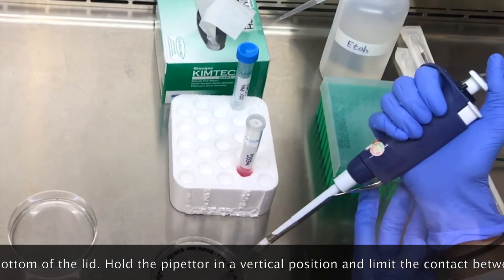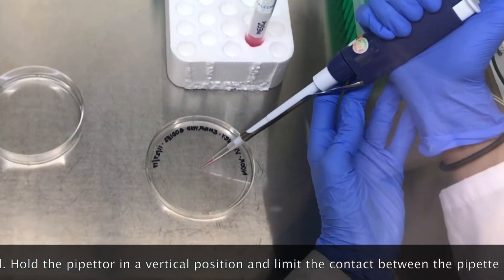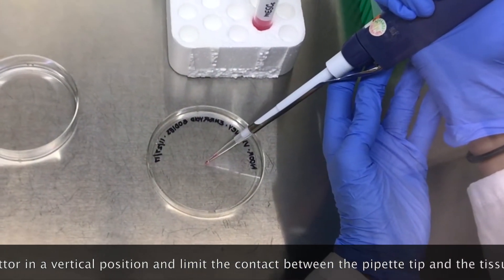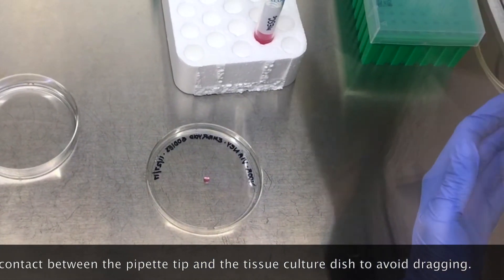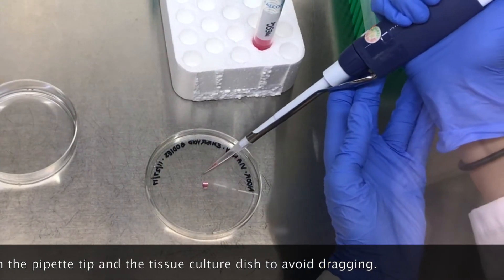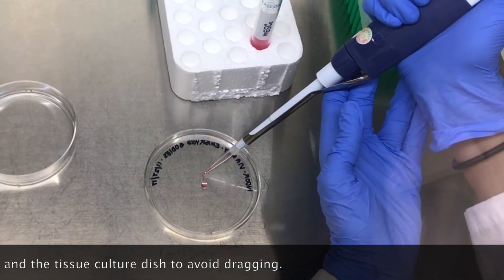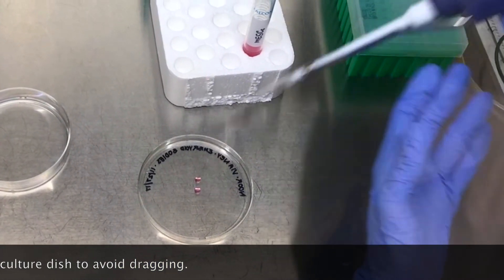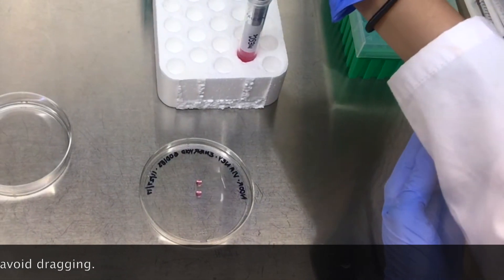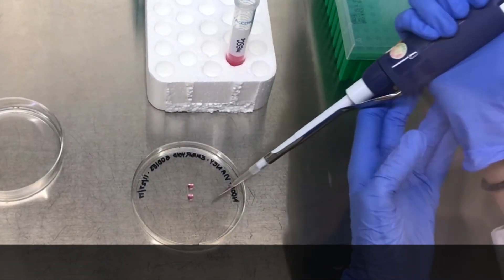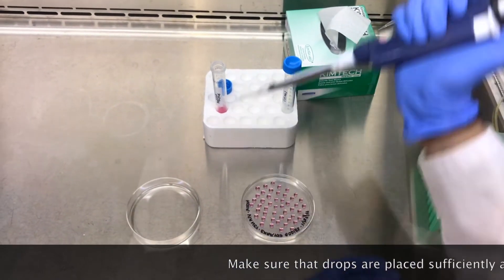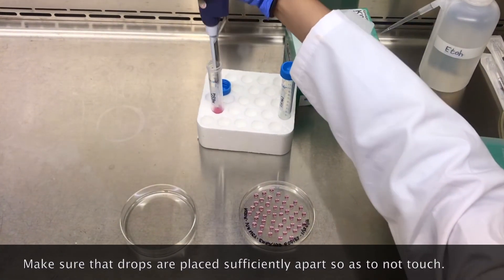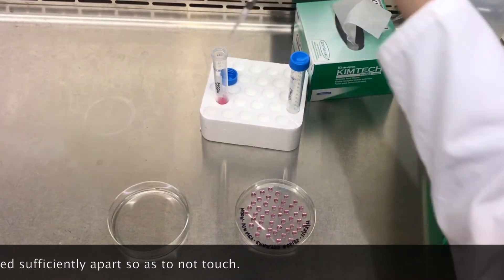Hold the micro pipette in a vertical position and limit the contact between the pipette tip and the petri dish to avoid dragging. Drops should be plated evenly and at some distance from the edges of the petri dish lid.